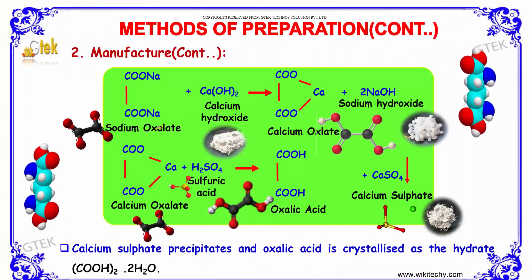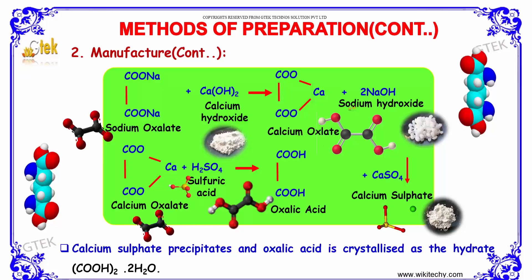In this following reaction we can see that calcium sulfate precipitates and oxalic acid is crystallized as the hydrate (COOH)₂·2H₂O. Sodium oxalate on reaction with calcium hydroxide produces calcium oxalate along with two moles of sodium hydroxide, which when treated with calcium sulfate produces oxalic acid.